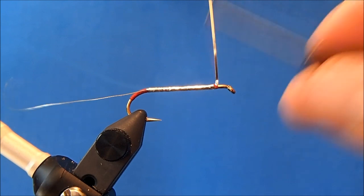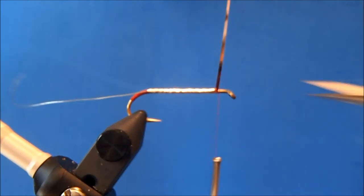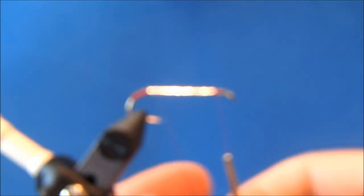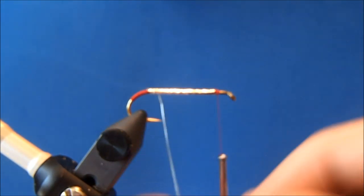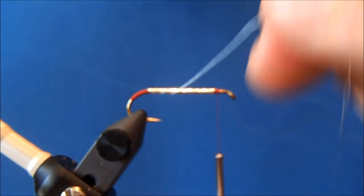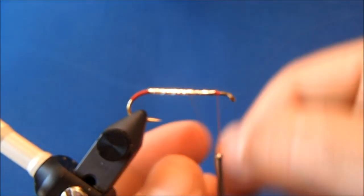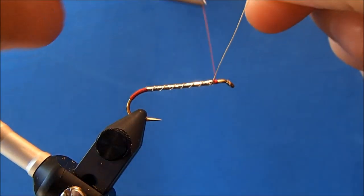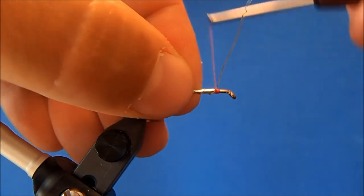So just going to bring this all the way up through until it reaches my thread and then I'll tie it off, trim the excess and now I can wrap my rib up through and so here just nice even wraps all the way up through until it gets to my thread and then again I'll tie it off and break the excess.